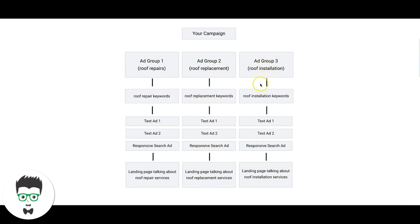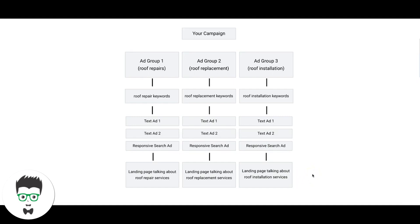Ad group 3 could be roof installation — all roof installation keywords, roof installation ads, going to a landing page about installing new roofs or re-roofing. You can also go granular geographically. For example, if the roofer is in Philly, ad group 4 could be 'Philadelphia roof repairs' — keywords all about Philadelphia roof repairs, text ads about Philadelphia roof repairs, going to a landing page specifically about roofing repairs in Philadelphia.